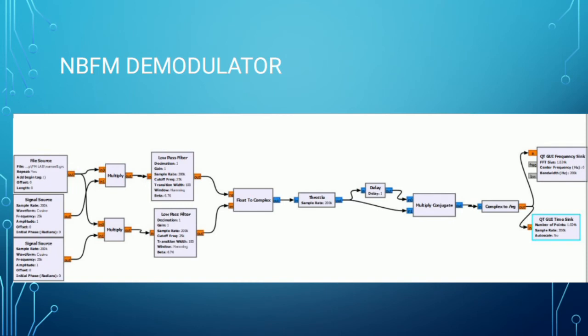This is the connection for the NBFM modulator. The file source is the data file we get from the previous modulating step, and then we are using two signal sources at 25 kilohertz. We pass this to a low pass filter in order to filter out, and then it is converted to complex.